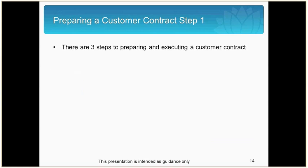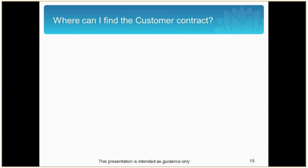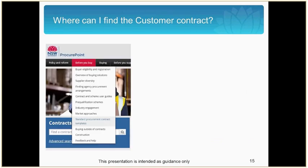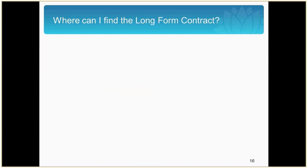We will now look at preparing customer contracts. There are three steps to preparing and executing a customer contract. The first step is to download the customer contract template from the ProcurePoint website. On ProcurePoint, at the top menu there is a 'Before You Buy' tab. If you click this, on the menu you will see a link to standard procurement contract templates. Click through and you will see links to the short form and long form ProcureIT contracts. ProcureIT was updated to version 3.2 on the 1st of July and became mandatory on the 1st of September. I would also like to draw your attention to the beta website, which has information on the long form contract.